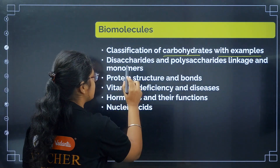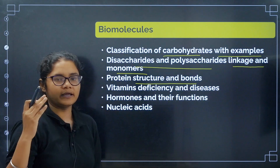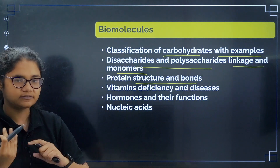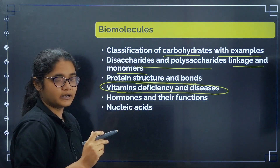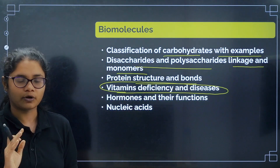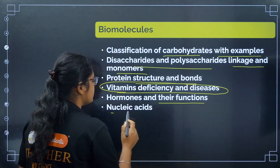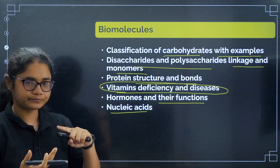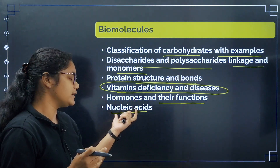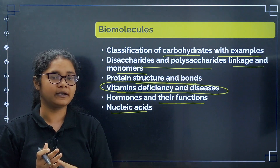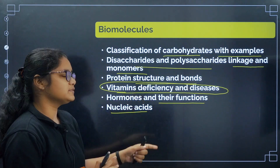Know the disaccharide and polysaccharide linkages with their monomers. For proteins, cover the primary, secondary, and tertiary structures and the bonds present in each. Vitamin deficiency and diseases is very very important — you can easily get one MCQ from here. Also revise hormones and their functions, and nucleic acids: nucleoside, nucleotide, the bonds between them, how many bonds in A-T and G-C pairs, and the difference between RNA and DNA.